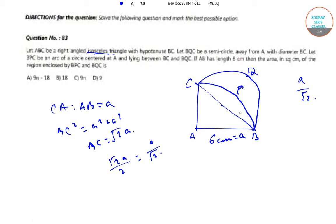Now CPB is a quarter circle, or rather quadrant, of radius A. Area of semicircle is equal to pi A squared by 4, whereas area of quadrant also equals pi A squared by 4. Therefore, area of region enclosed by BPC is equal to BQC is equal to area of triangle ABC is equal to 18. That is option B.